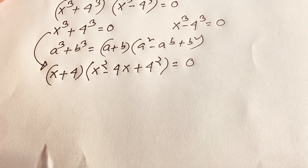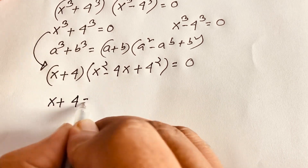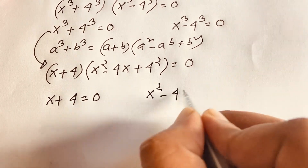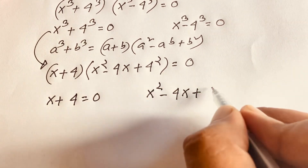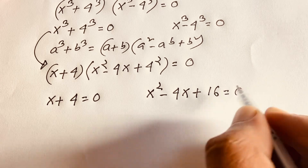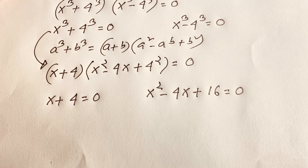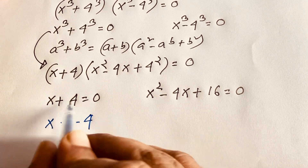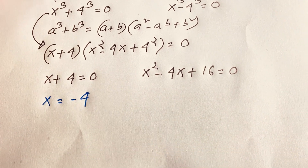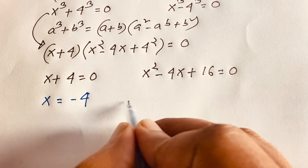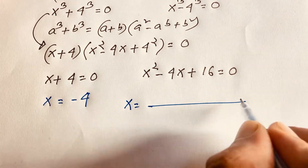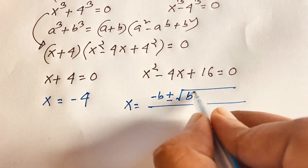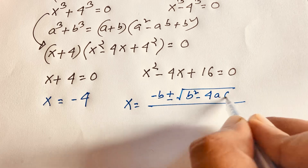From Case 1 we have two sub-cases. First: x plus 4 equals 0, giving x equals negative 4. Second: x squared minus 4x plus 16 equals 0. To solve this quadratic we apply the quadratic formula: x equals negative b plus or minus square root of b squared minus 4ac, all over 2a.